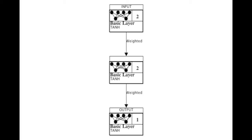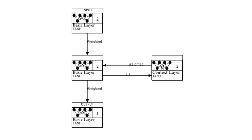Now we'll look at a slightly more complicated neural network — a feed-forward or perceptron neural network. Here you can see there are three layers. NCOG also supports more complex types like the Elman neural network. The Elman neural network has a context layer that is connected in through the hidden layer, so that it remembers the signals that were passed as the neural network was processed, giving it a sort of short-term memory.